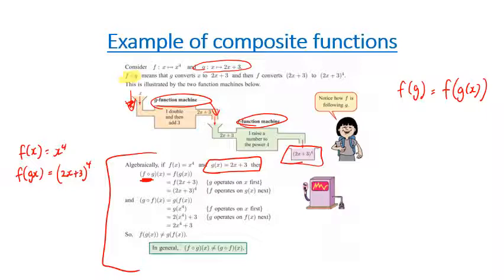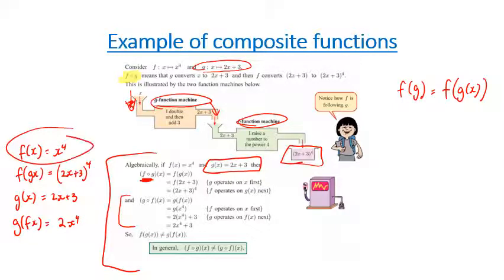If we were to do it the other way — following from f — we'd have our g of x, which is 2x plus 3, but we have to replace our x with whatever the f of x function was. So g bracket f of x would be 2 times x to the power of 4 — because that's what our f function was — plus 3. And that's where we end up with that answer.